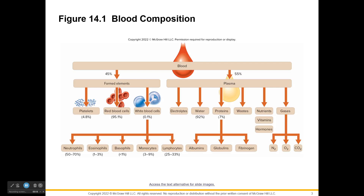The majority of blood is plasma, which is mainly made of water — that's why blood is a liquid tissue. The formed elements — erythrocytes, leukocytes, and platelets — make up almost half of blood, with red blood cells being the vast majority. You don't want too many white blood cells, since elevated levels indicate infection; a normal white blood cell count is a sign of health.